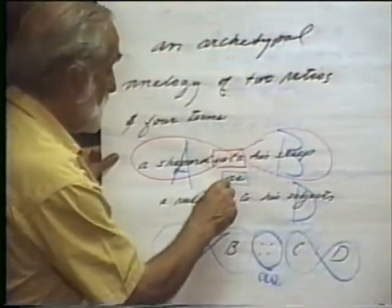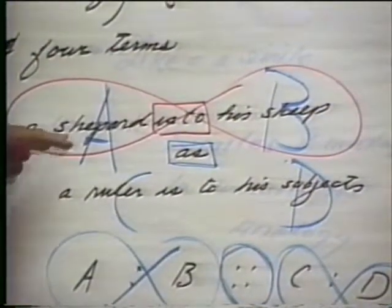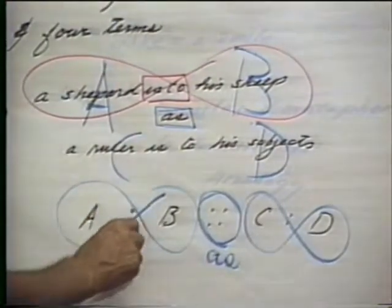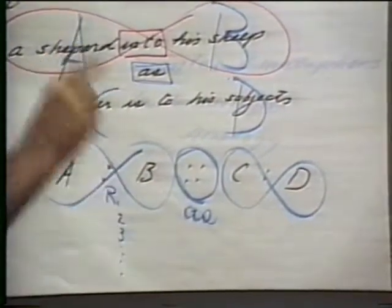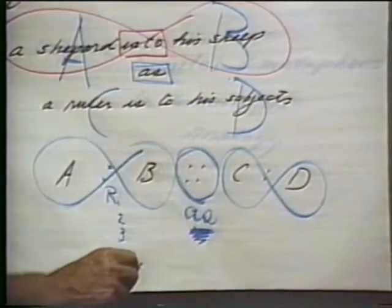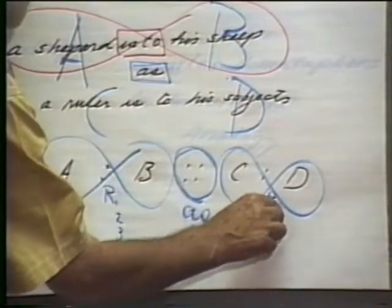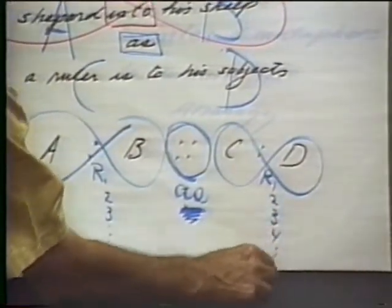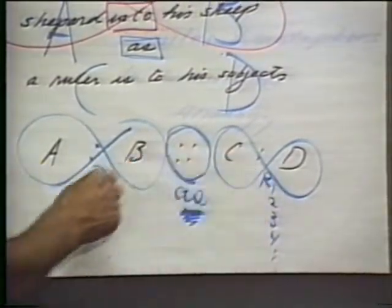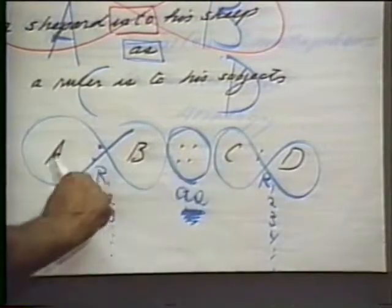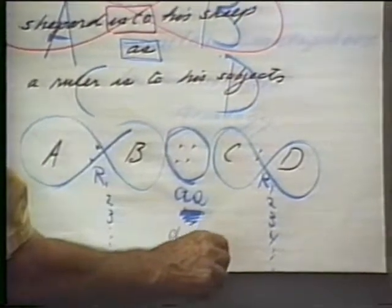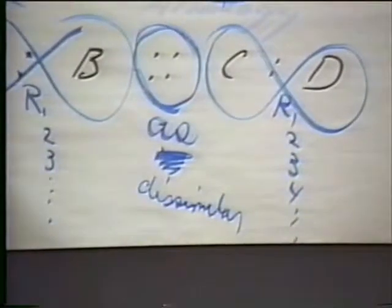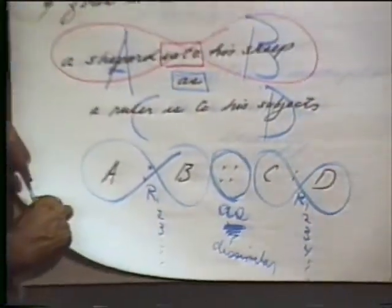It's governed by this rather curious word: 'as.' A shepherd is to his sheep — A is to B — as C is to D. That specifies, of all the ways you can relate the first two terms, and there can be many ways of relating them, similarly you can study all the ways in which a ruler is to his subjects, and you can find a set that is similar between the two. When you have that, you have an analogy. There will also be a set of differences — you're going to ignore those. That is basically our introduction to analogical thinking.